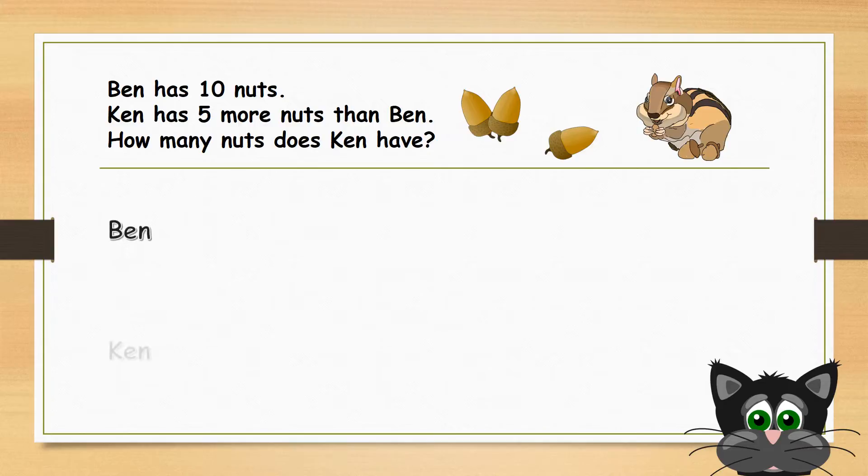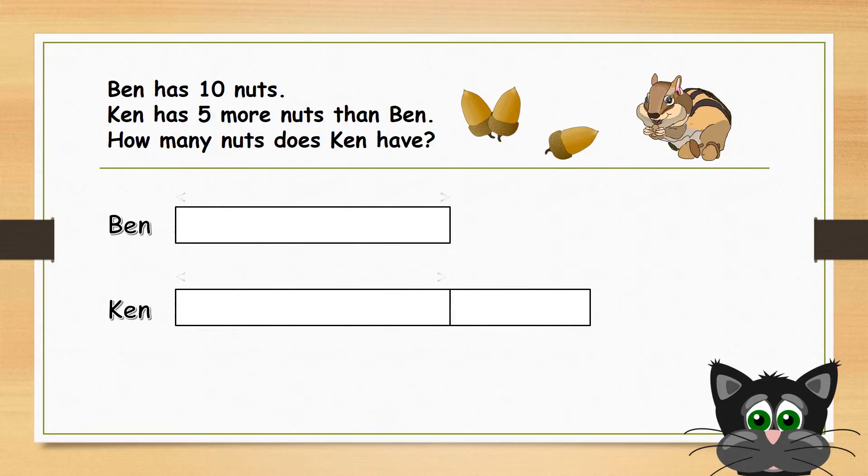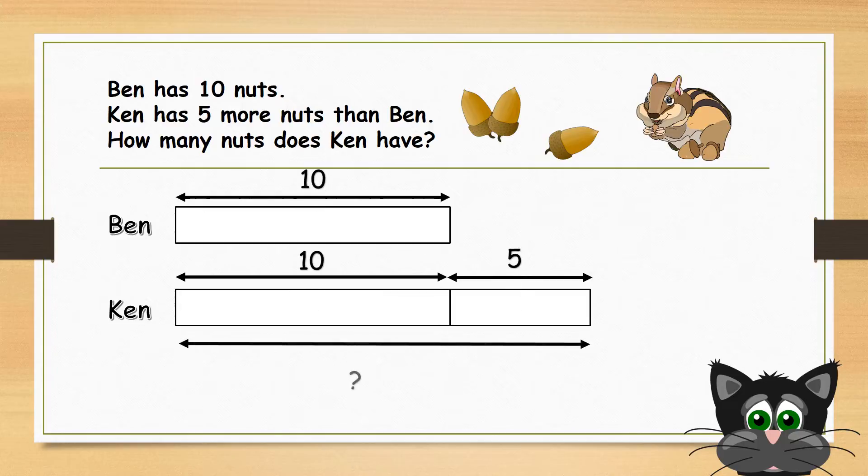Let's draw the model to show the relationship between the number of nuts Ben and Ken have. From the model, you can see that Ken has another 5 more than Ben.